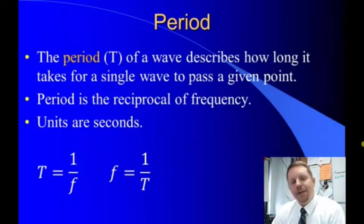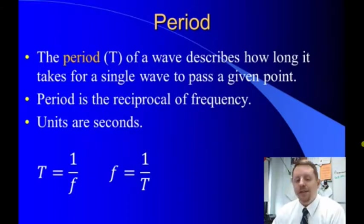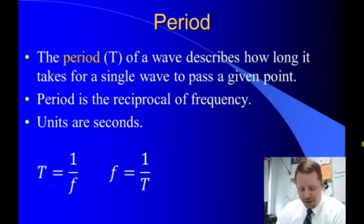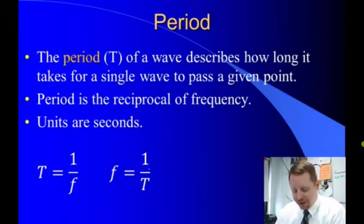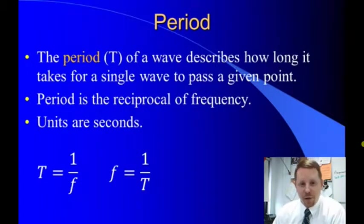Period is very closely related to frequency. Period describes how long it takes for a single wave to pass a given point, so it's the reciprocal of frequency. Period is equal to one over frequency, and frequency is equal to one over period. The units of period are seconds, therefore the units of frequency are one over seconds.